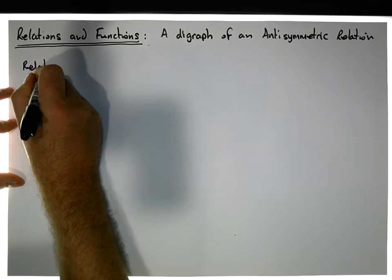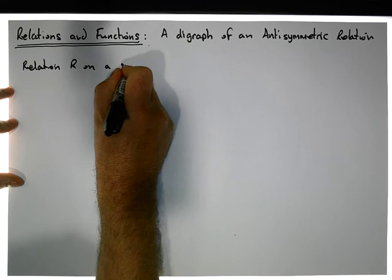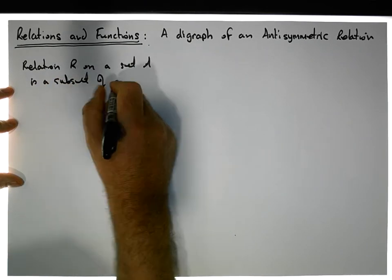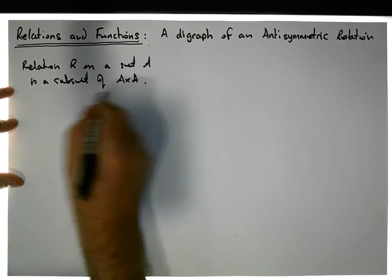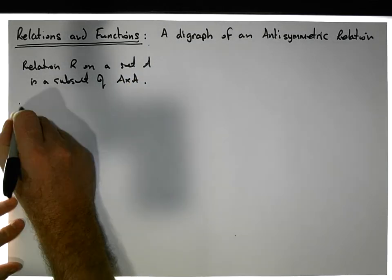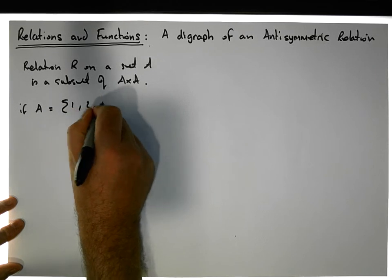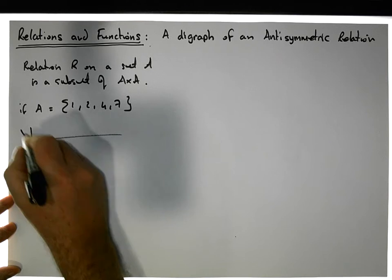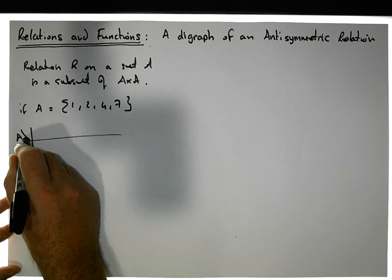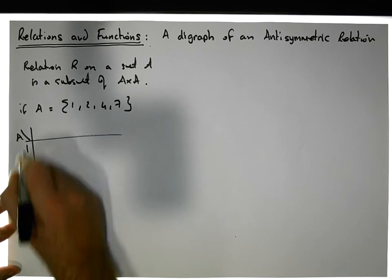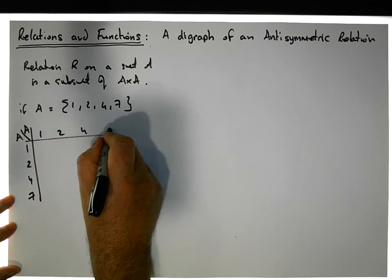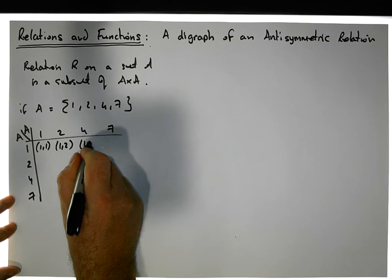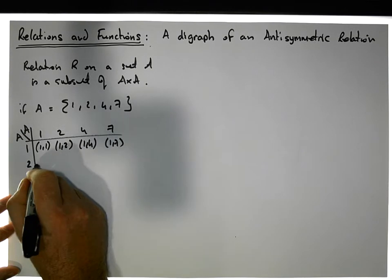Let's keep in mind what a relation is. A relation on a set A is a subset of A cross A — so it's a subset of the cross product of A with A. As an example, if A is the set {1, 2, 4, 7}, we can use this device to construct the cross product: list the elements of A down a column — 1, 2, 4, 7 — and also across a row — 1, 2, 4, 7. Then we construct the ordered pairs: (1,1), (1,2), (1,4), and (1,7).